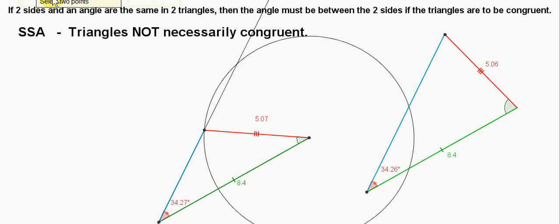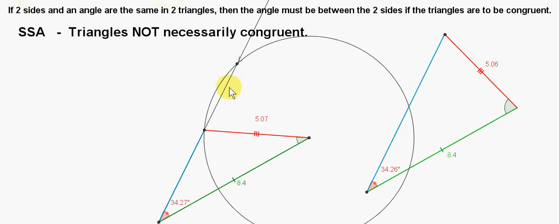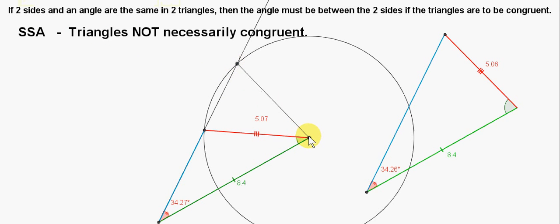Then we get the intersection of the circle and this line and we connect a line to here. So we see there are two possible triangles that have sides of 5.07, 8.4 and an angle of 34.27 degrees.